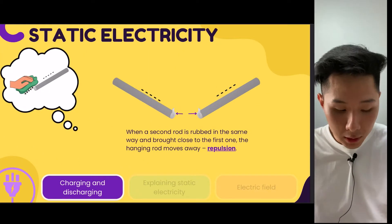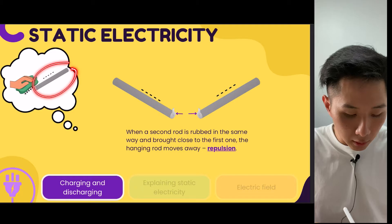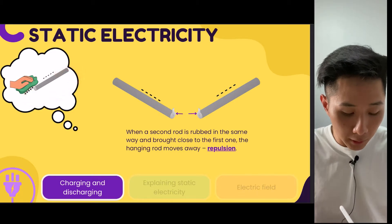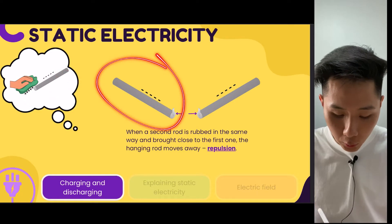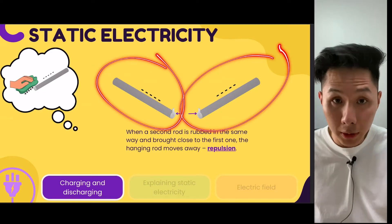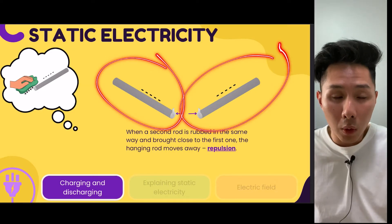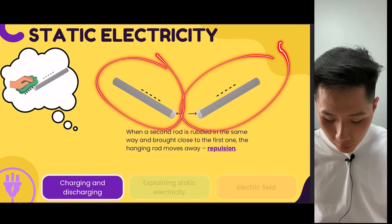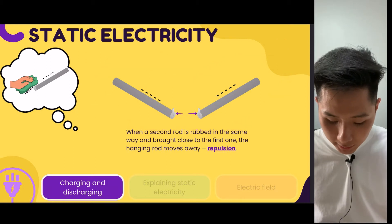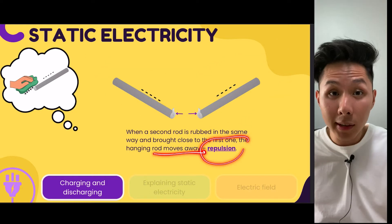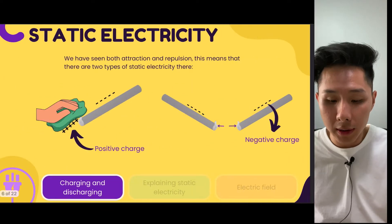And if you were to rub another plastic rod with a cloth, and then bring both plastic rods together, which both have electrons, you are going to see both rods move away from each other. And this is called repulsion.